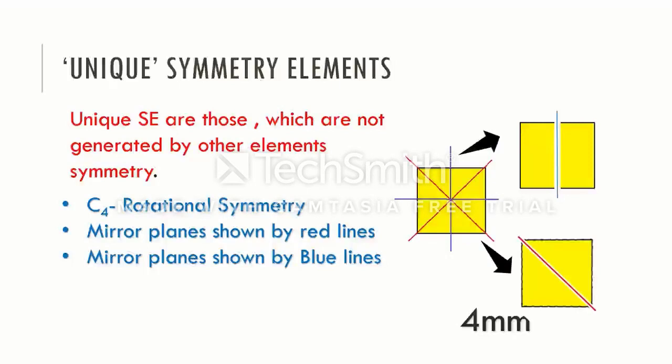To understand the concept of unique symmetry elements, let us take an example of a simple square. A square has four-fold rotational symmetry. Two pieces generated by cutting the square by a diagonal mirror plane are not distinguishable from the pieces which will be generated by another diagonal plane. Therefore, these two diagonal planes represent only one unique plane. We can obtain one plane by another by rotating through 90 degrees, that is, by applying a four-fold rotational operation. And the same is true in case of all blue planes. So we have only two unique mirror planes in this square.